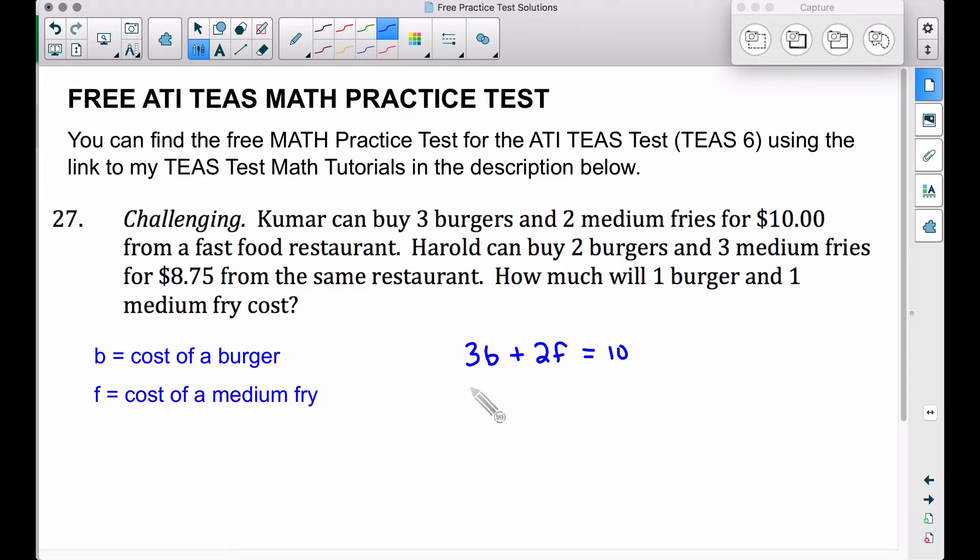Now let's look at Harold. He can buy two burgers. So two hamburgers times the price of a hamburger plus three orders of medium fries times the price of a medium fry is equal to $8.75. I got that from the second sentence.